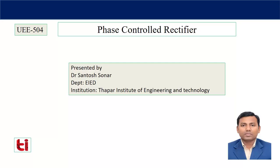In this lecture we will discuss about phase-controlled rectifiers. First, let's discuss about rectifiers. A rectifier is a converter which converts an AC signal into a DC signal. It is a well-established converter. In a rectifier we are using an uncontrolled device, that means a diode. Now when the diode is replaced by any other control device like a thyristor, MOSFET, IGBT, or transistors,